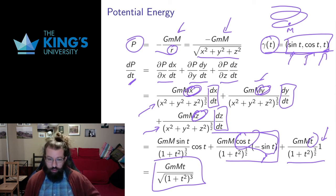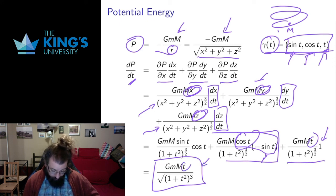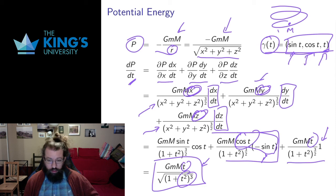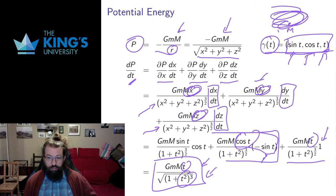The result is increasing, and everything is positive — which makes sense because I'm moving along a helical path away from the central mass, so potential energy should increase. However, the numerator has t while the denominator is asymptotically t³ (because the squared and square roots cancel), so I'm increasing at a slower and slower rate. That also makes sense: as you get further away, the relative change in potential energy gets smaller. Near the object I'm gaining potential energy quickly; further away, I gain it more slowly. And that's the chain rule — evaluating how a scalar field changes while we move along a parametric curve.